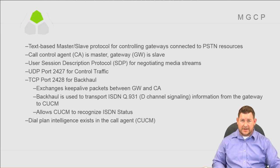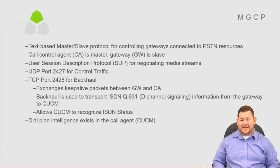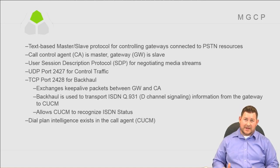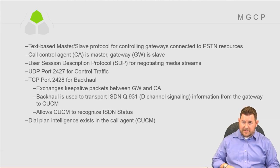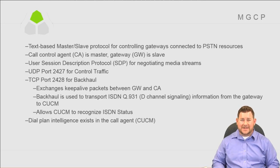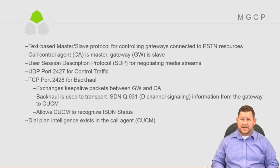MGCP — Media Gateway Control Protocol — is used to control gateways. It is also a master-slave protocol and is all text-based. The master in this case is the call agent, which is CUCM, and the slave is the actual gateway. The gateway takes instruction from CUCM when running MGCP. MGCP also uses Session Description Protocol, SDP, for negotiating media streams — which SIP also uses. That's about as far as the similarity between these two protocols goes.